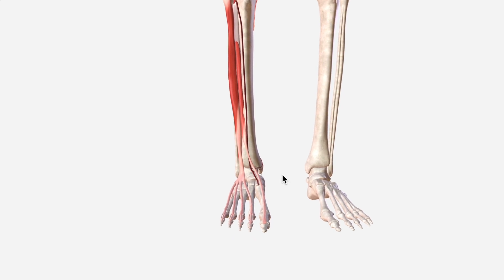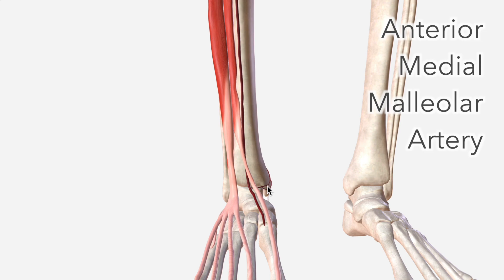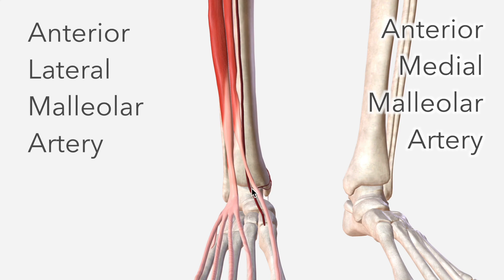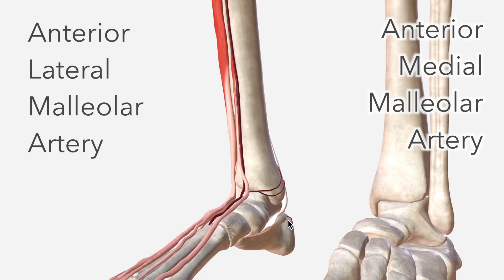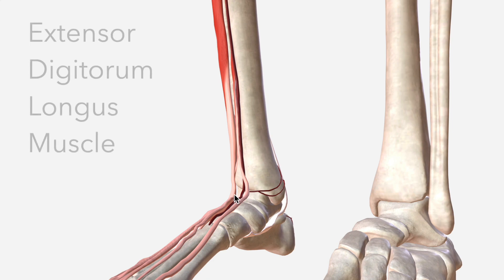Moving further down, we have the anterior medial malleolar artery and the anterior lateral malleolar artery. Both supply the ankle joint. The anterior lateral malleolar passes beneath the tendon of the extensor digitorum longus muscle.